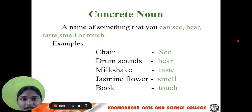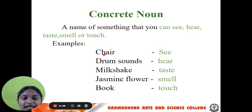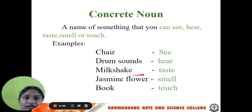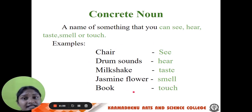Now let us see concrete noun. Concrete noun is the opposite of abstract noun. It is a name of something that you can see, hear, taste, smell or touch. For example, chai — we can see it; a drumstone — we can hear it; milkshake — we can taste it; jasmine flower — we can smell it; book — we can touch it. So things which we can see, hear, taste, smell or touch are called concrete nouns.